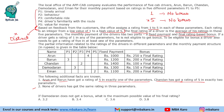The first question asks: if Damodaran does not get a bonus, what is the maximum possible value of his final rating? If he gets a rating of 1 in one of the parameters — which stops his bonus — and 3 is already given, to maximize the rating we give him 5 and 5 in 2 parameters, and 4 in the remaining one. That gives 1+3+5+5+4 = 18, so his rating is 3.6.